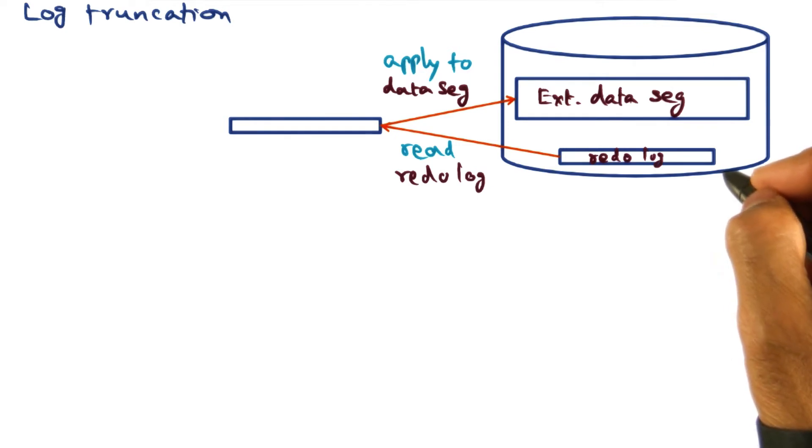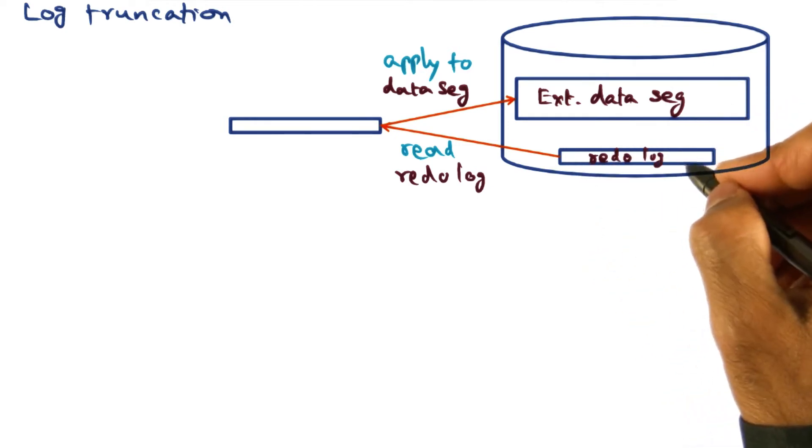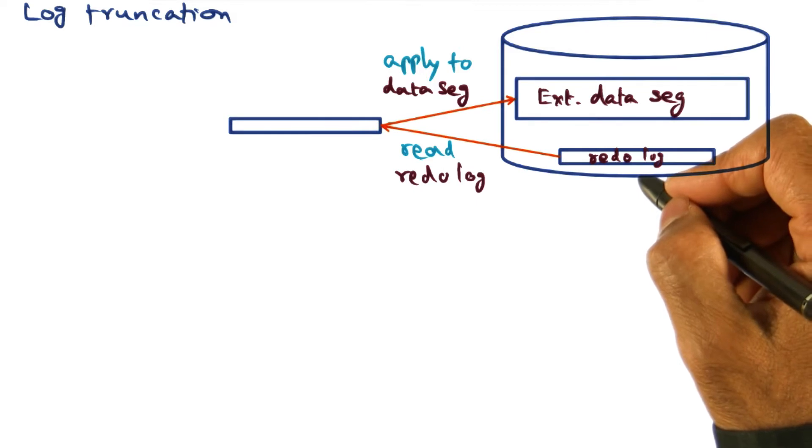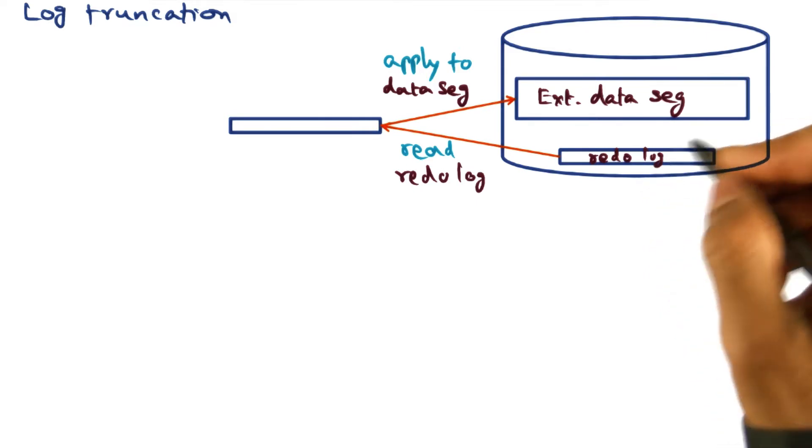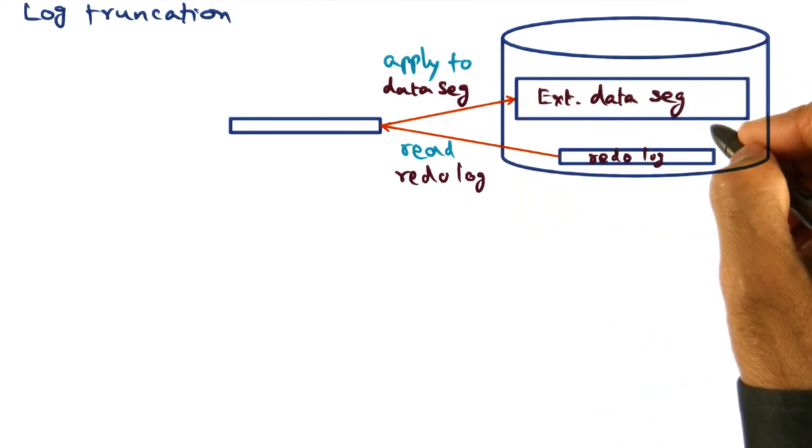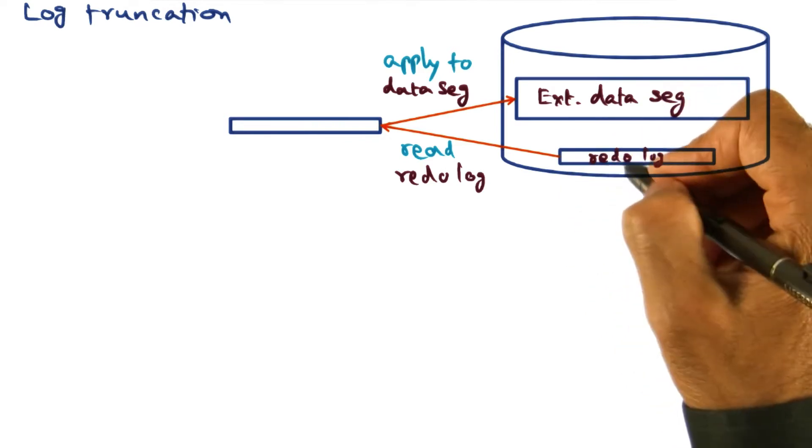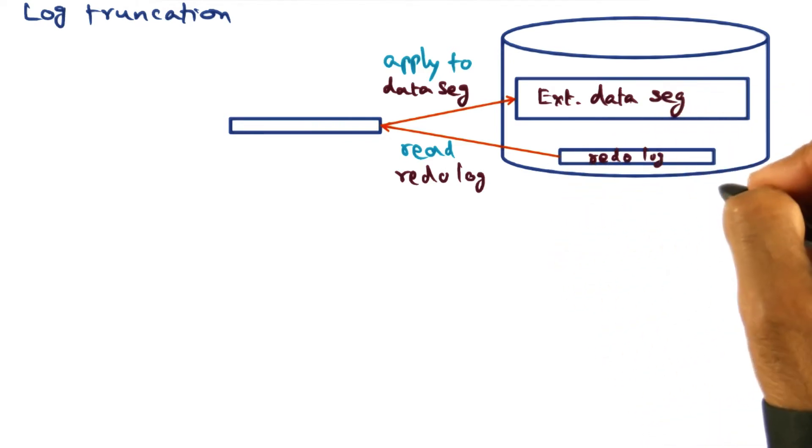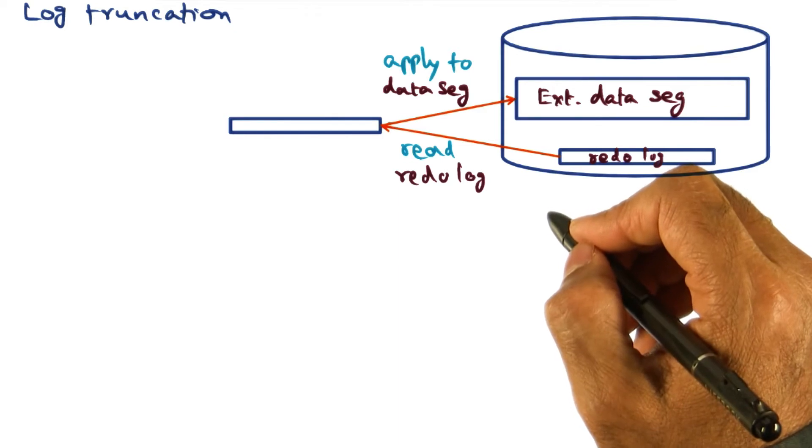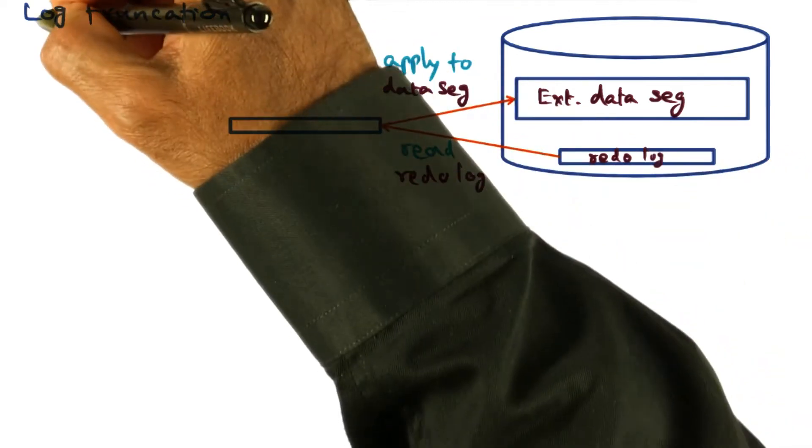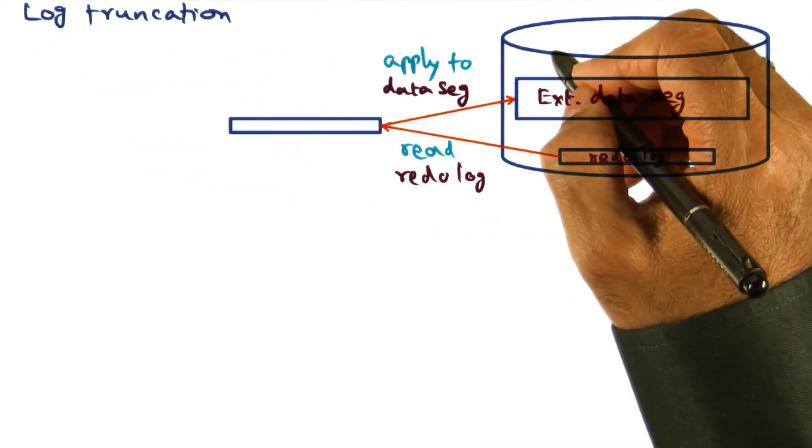Regardless, these are unnecessary overhead in terms of space and clutter. And also, if a particular application needs to map an external data segment, then we have to know whether that data segment is up to date or not, and that depends on whether there are some redo logs pending to be applied to those external data segments. So all of these things suggest that what we need to do is truncate the log periodically.